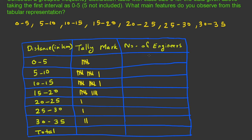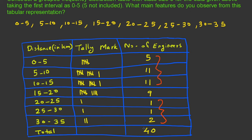From the tally marking, 0–5 contains 5 engineers, 5–10 has 11 engineers, 10–15 has 11 engineers, 15–20 has 9 engineers, 20–25 has 1 engineer, 25–30 has 1 engineer, and 30–35 has 2 engineers. The total is 40. We can observe from this data that very few engineers have homes more than or equal to 20 kilometers from their workplace, and most engineers have their workplace within 15 kilometers of their home.